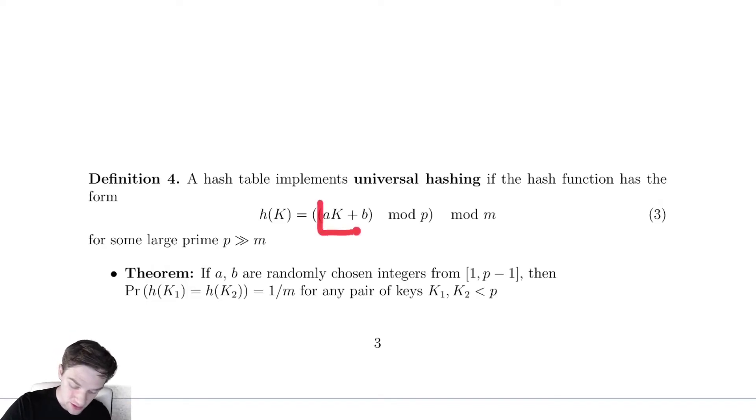So this value gives me a value between 0 and P minus 1. And then we take that value mod M, and therefore that would give me a value between 0 and M minus 1. So this again maps down to our correct range of values.